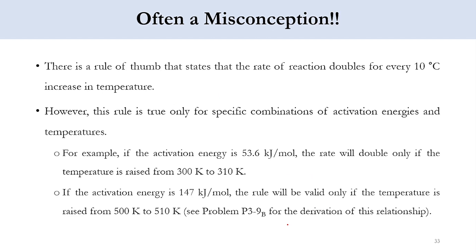There is often a misconception from previous courses that for every 10 degree Celsius increase in temperature, the rate of reaction doubles. However, this is not always true — it is true only for specific combinations of activation energy and temperature. For example, if the activation energy is 53.6 kJ/mol, the rate doubles only if temperature increases from 300 to 310 Kelvin. If the activation energy is 147 kJ/mol, the rule holds only from 500 to 510 Kelvin, not from 510 to 520 Kelvin. See problem P3-9B in Fogler's Elements of Chemical Reaction Engineering for the derivation.